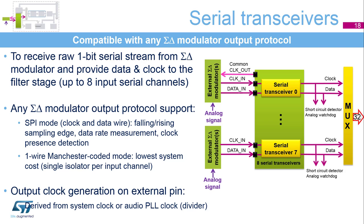The DFSDM features a clock output signal to drive the Sigma Delta modulators. It can be used as a source for the SPI clock internally, avoiding the need for an additional GPIO pin. The clock output has an adjustable division factor and can be driven either from the system clock or from the fine-tuned audio PLL clock.